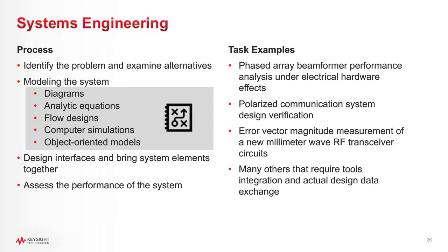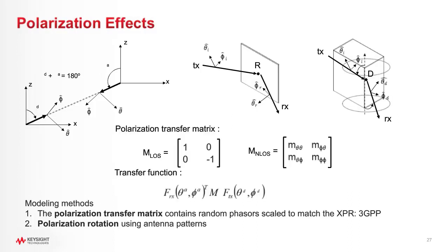I would like to demonstrate two more cases which are dual polarized communication system verification and millimeter wave RF transceiver performance evaluation through error vector magnitude test. In this page, let's start how we can interpret the polarization effect of the communication link, which have been reflected, refracted, or diffracted by some material. Each antenna or array has an associated local Cartesian coordinate system, XYZ, as shown in the figure.